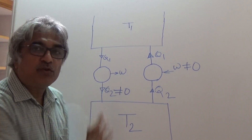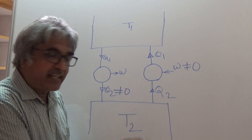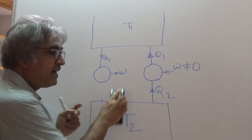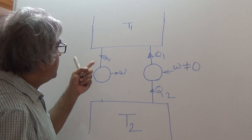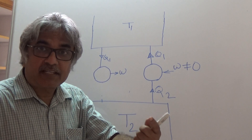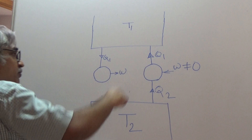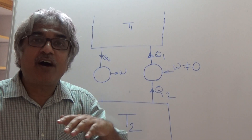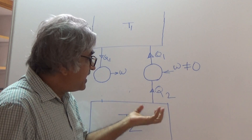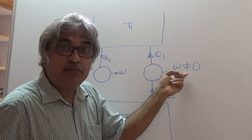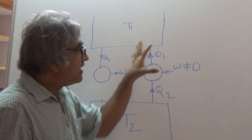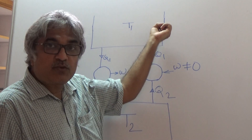Violating Kelvin-Planck means saying Q2 is zero — there is no heat rejection. If Q2 is zero, this engine is converting all the heat supplied to it into work with no heat rejection. This is not physically possible, but we deliberately violate it as a thought experiment. We are not going to violate the Clausius statement; we will show how it automatically gets violated.